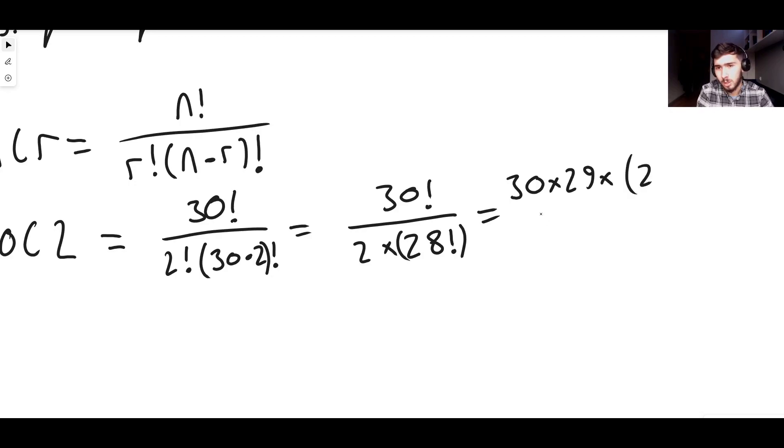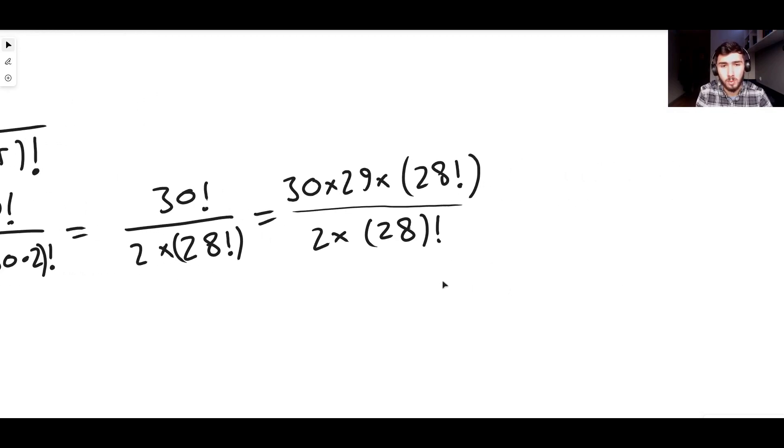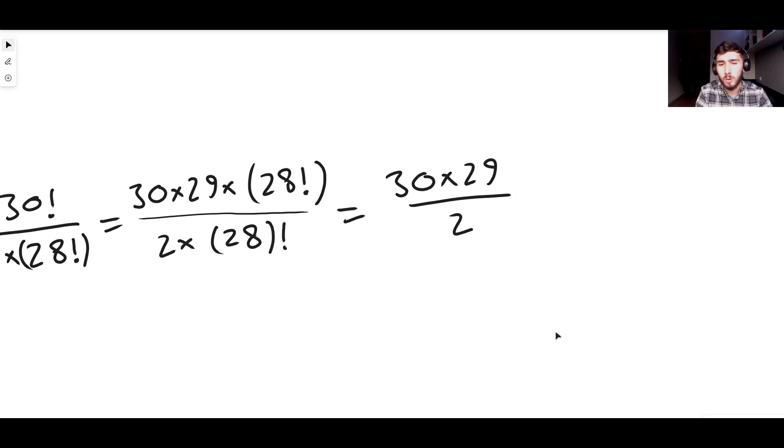That is, 30 factorial is 30 times 29 times 28 factorial, right? Because 28 factorial will give you all of the other numbers going down until you get to 1. And that's still being divided by 2 times 28 factorial. The reason why we did this is because now the 28 factorials will cancel out. So we just get, it's 30 times 29 divided by 2. And once we do this it's very easy.